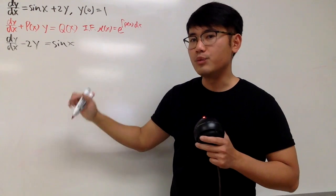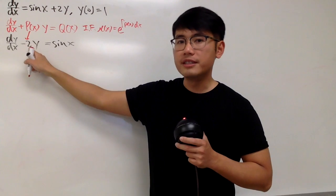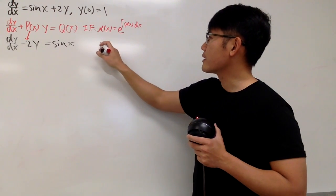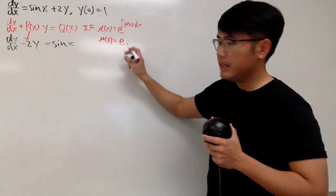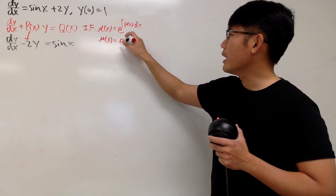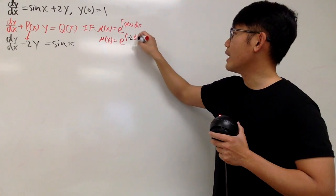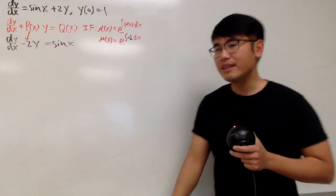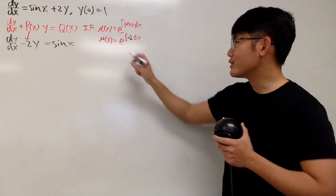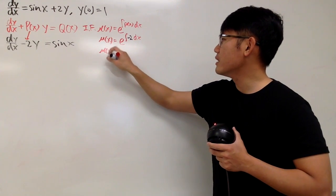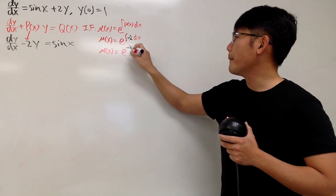With that being said, we know p in our situation is just negative 2. Therefore, our integrating factor mu is going to be e raised to the power of the integral of p, which is negative 2, times dx. Integrating negative 2 in the x world, we get negative 2x.